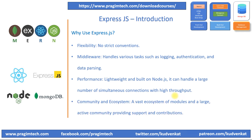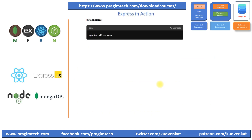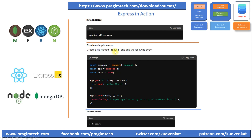A vast ecosystem of modules and a large active community provides support and contributions for ExpressJS development. It's very easy to use ExpressJS as an API in MERN stack application development. We just need to install Express on the local machine, create a simple server using a JavaScript file called app.js, and then run app.js as a server on port 3000 or any selected port to make the API up and running.